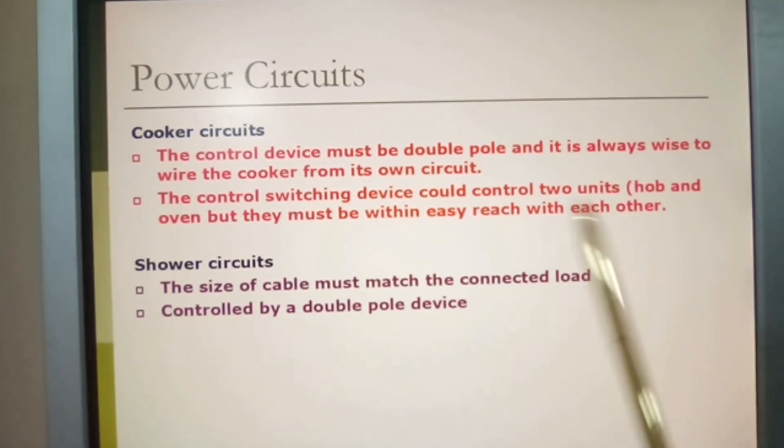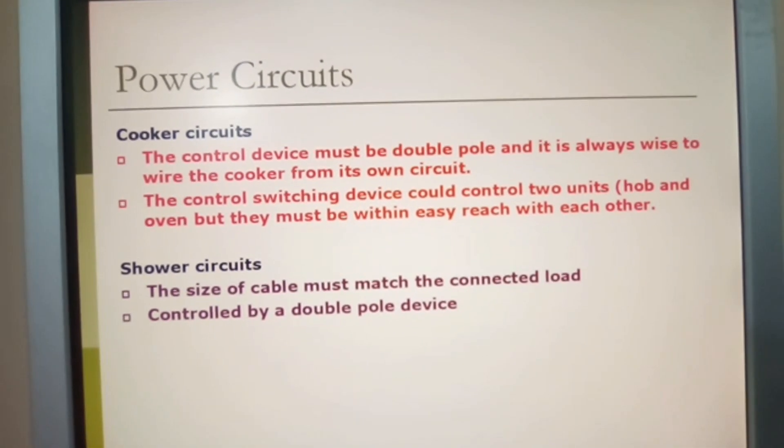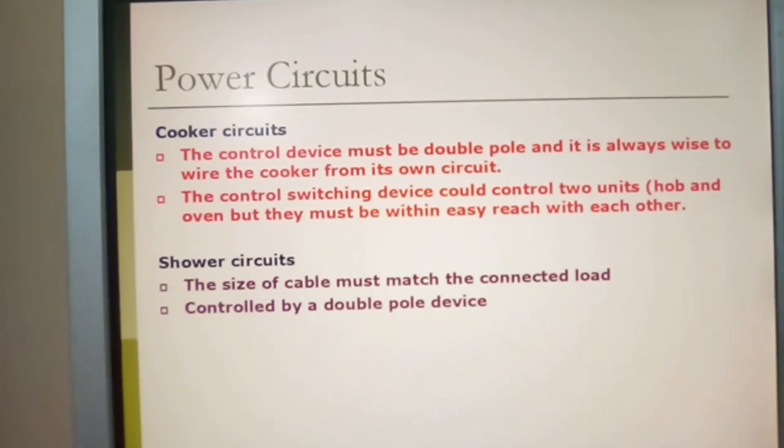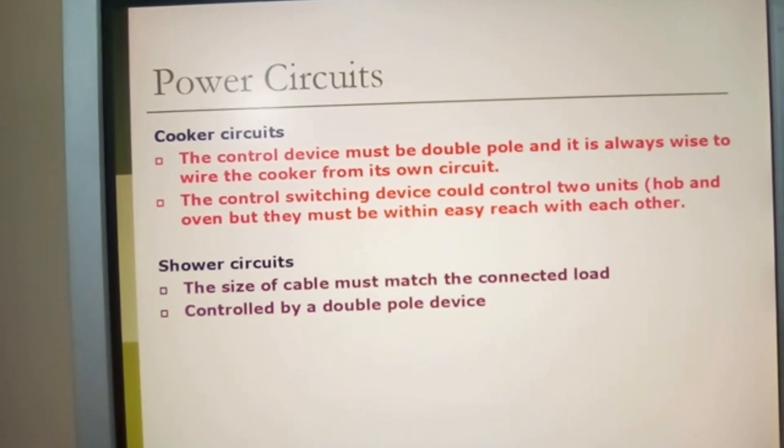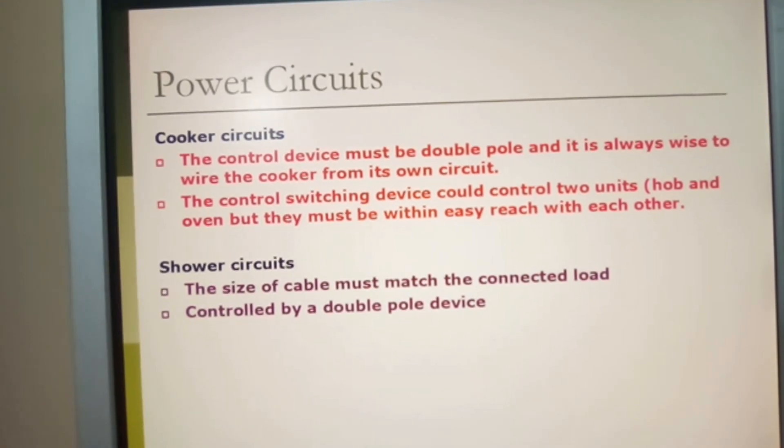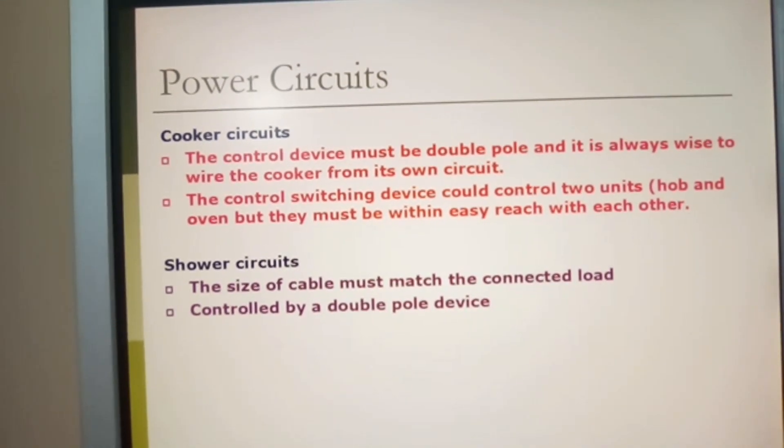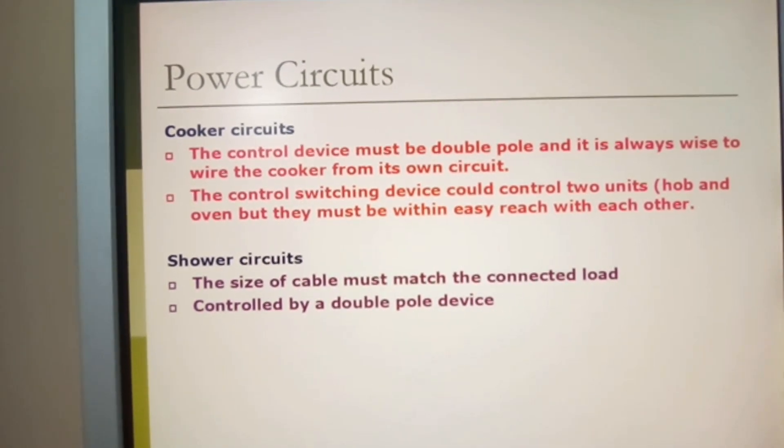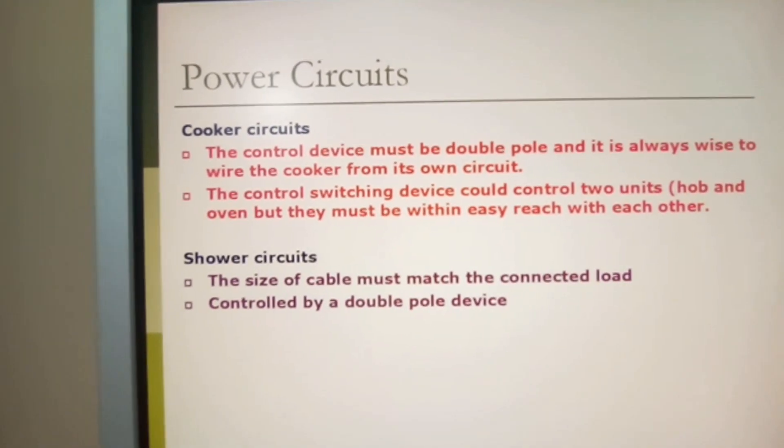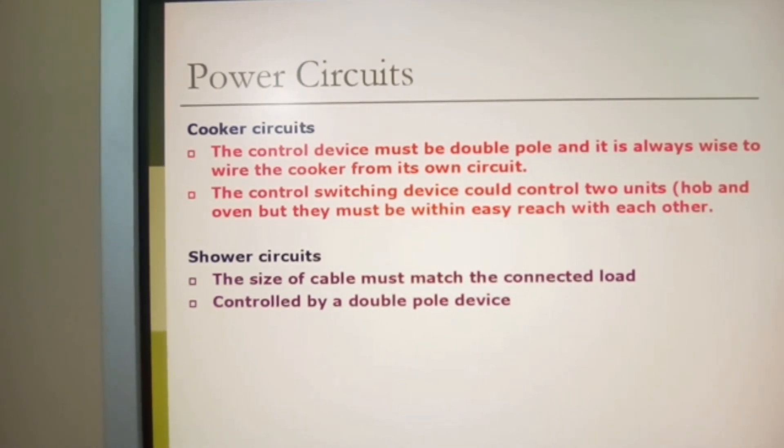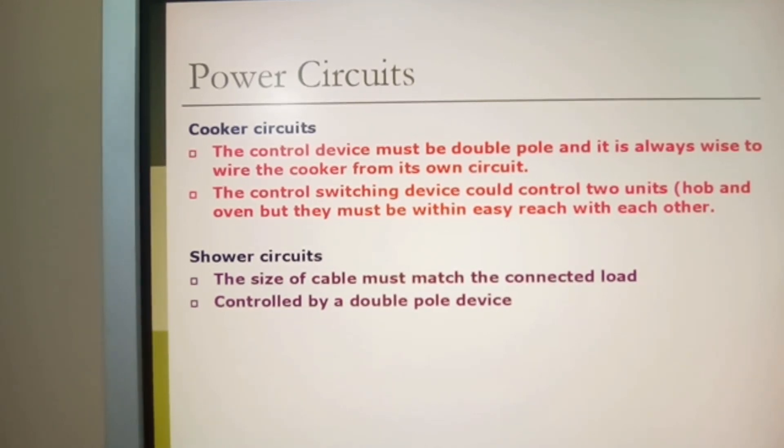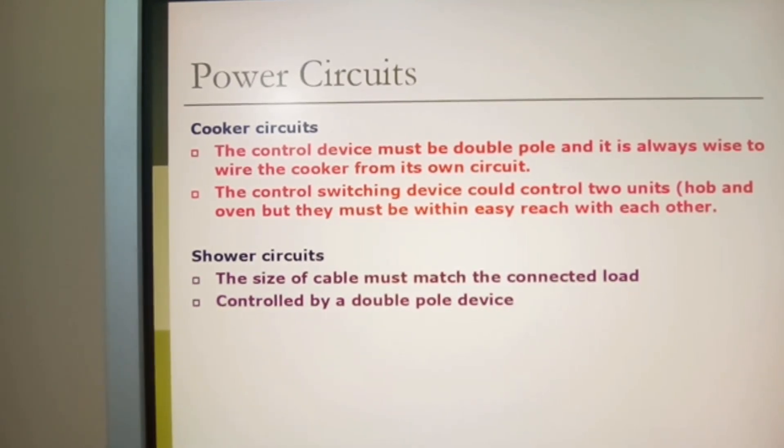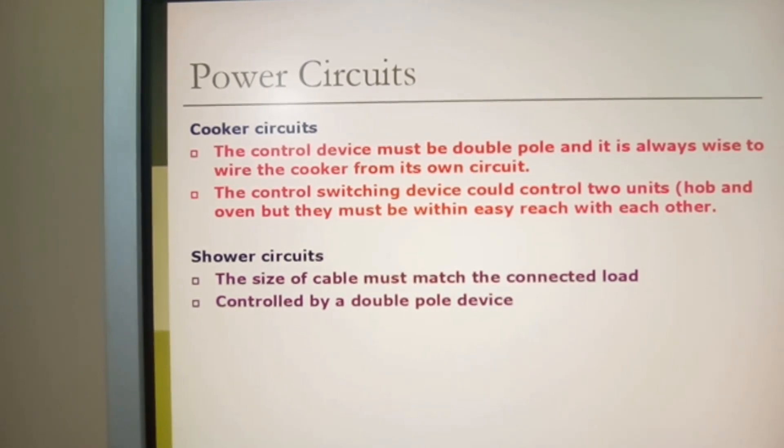This was at the point in time when we used to have the cooker fed by six or ten millimeter cable, and that is still possible now. But what has happened over time is that we now can basically feed our oven from a 13 amp socket, which will allow us to take approximately four kilowatts. Most ovens are now rated at three kilowatts total: two kilowatts at the top and one kilowatt at the bottom, using two elements.